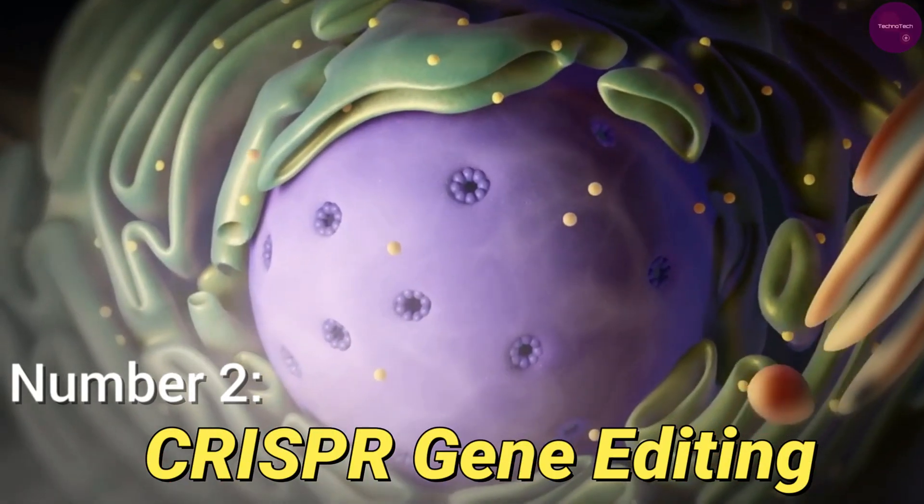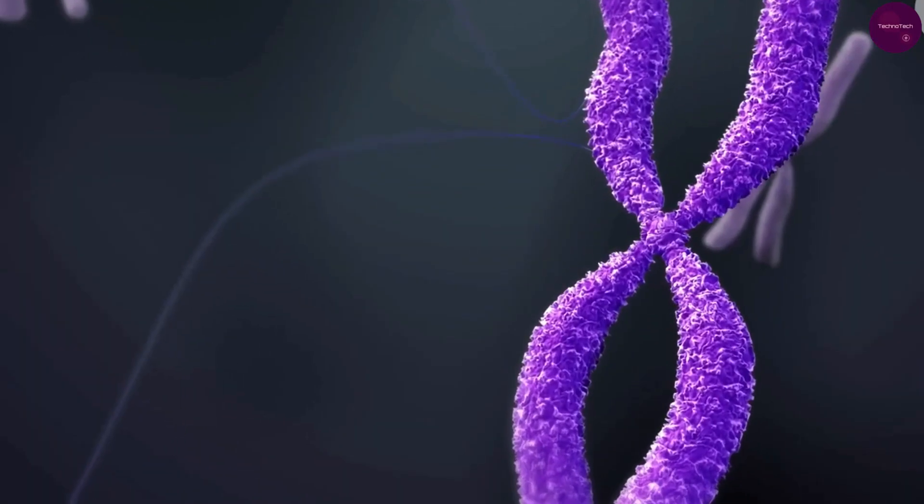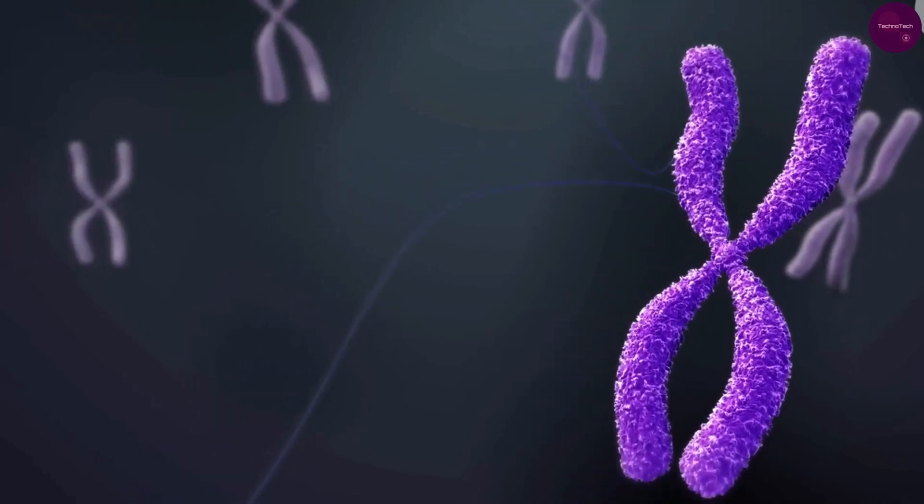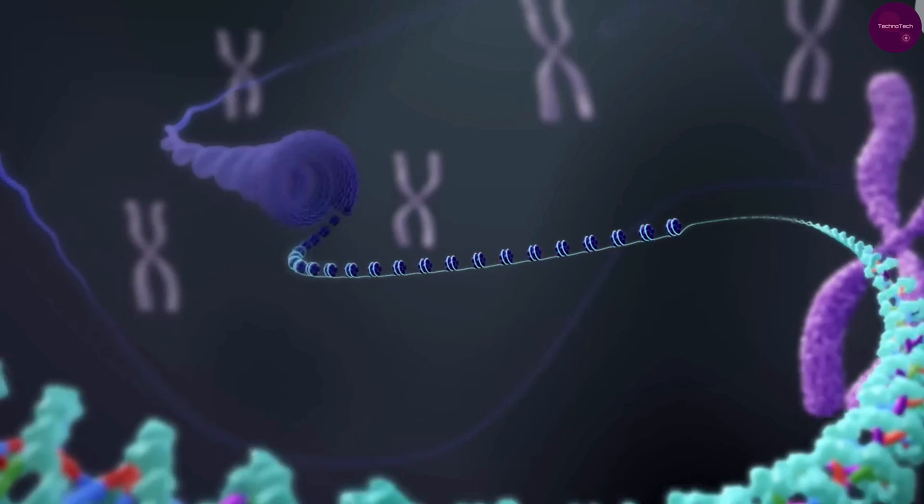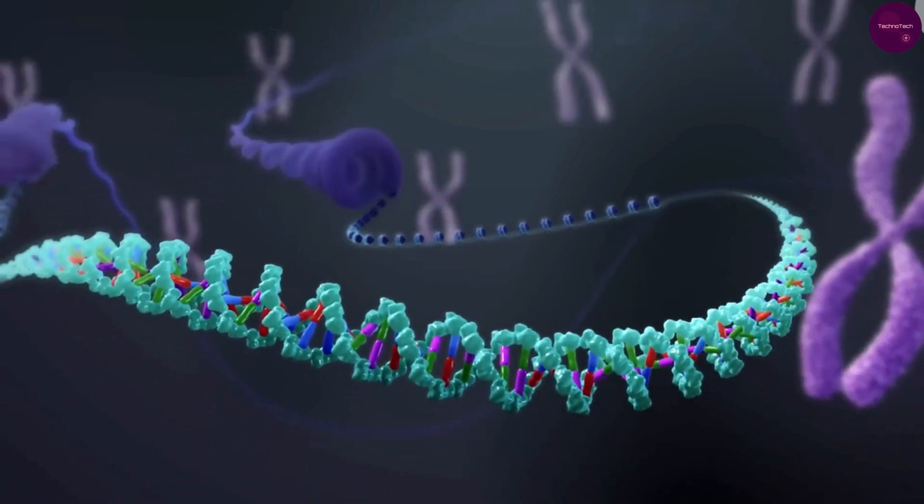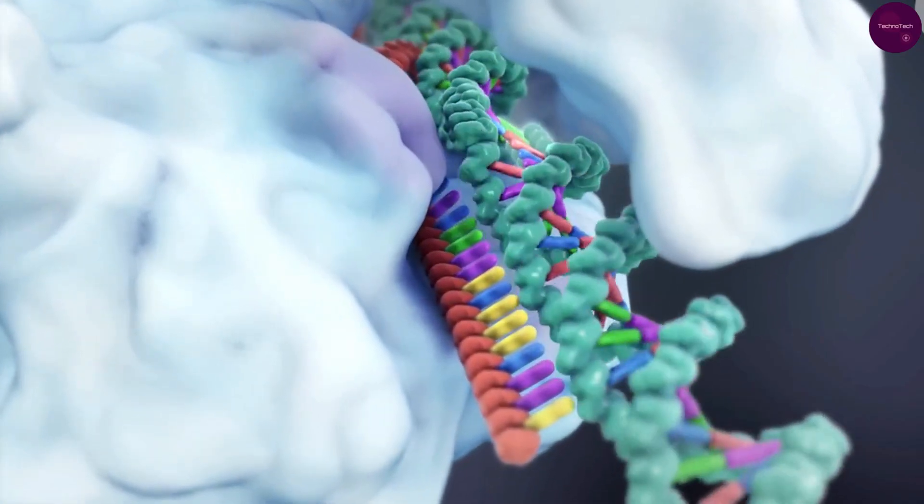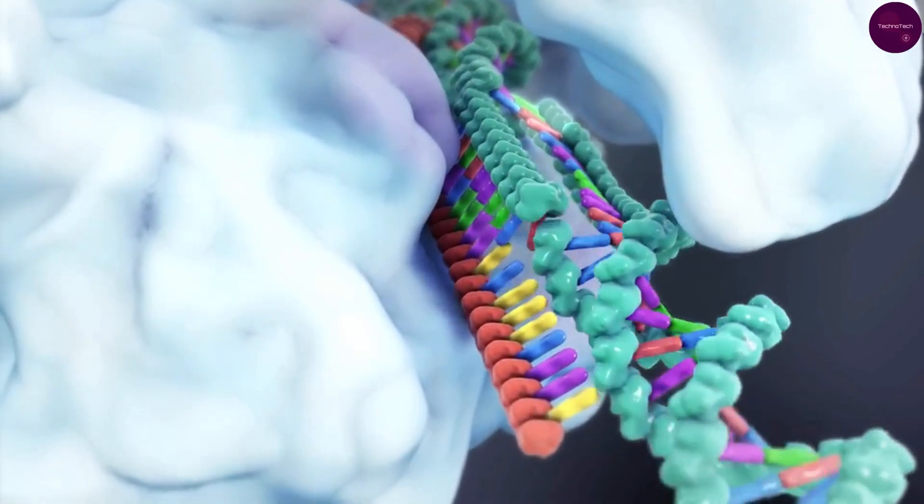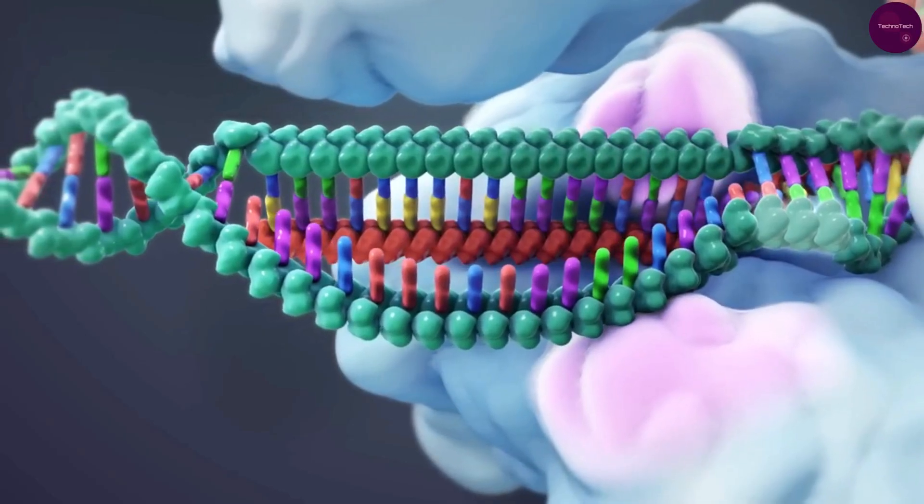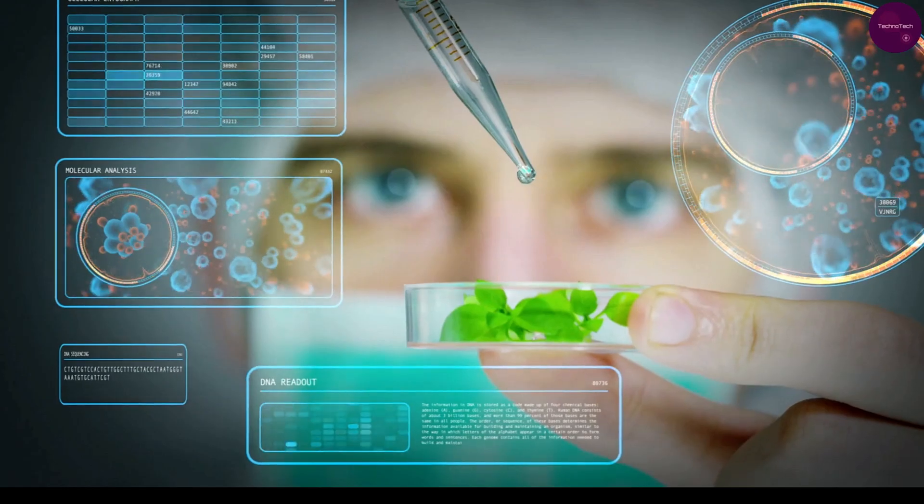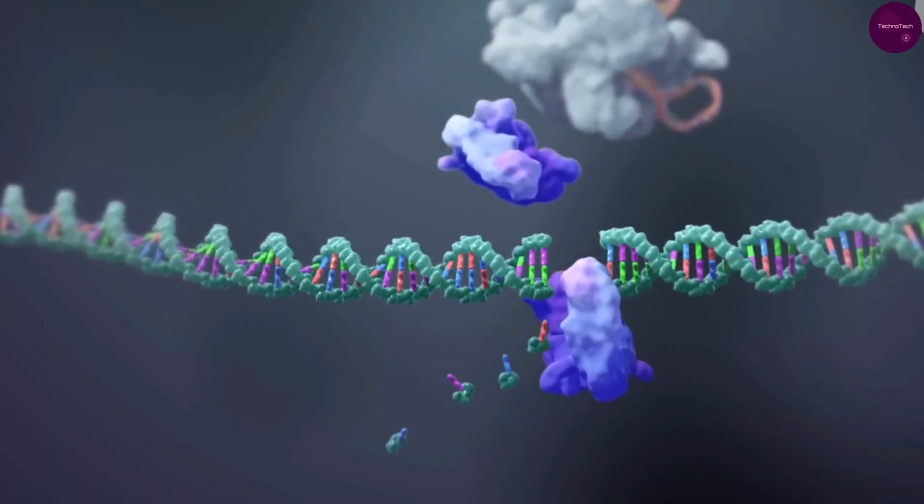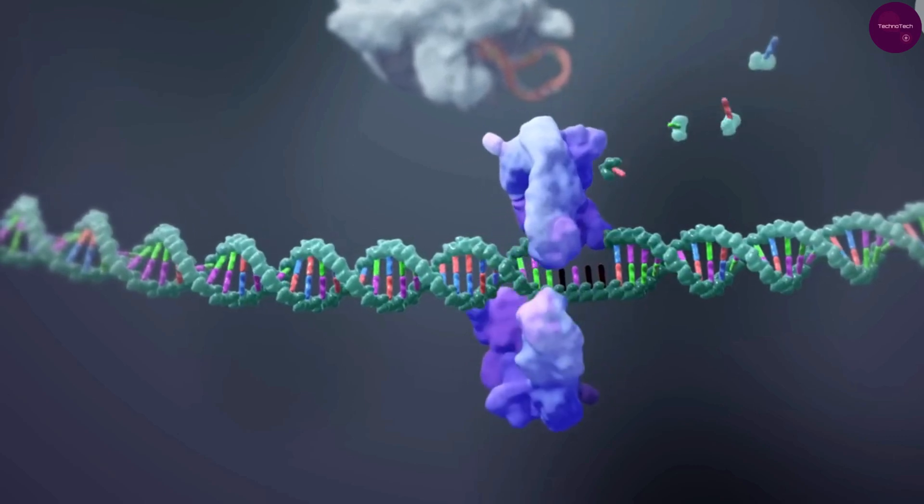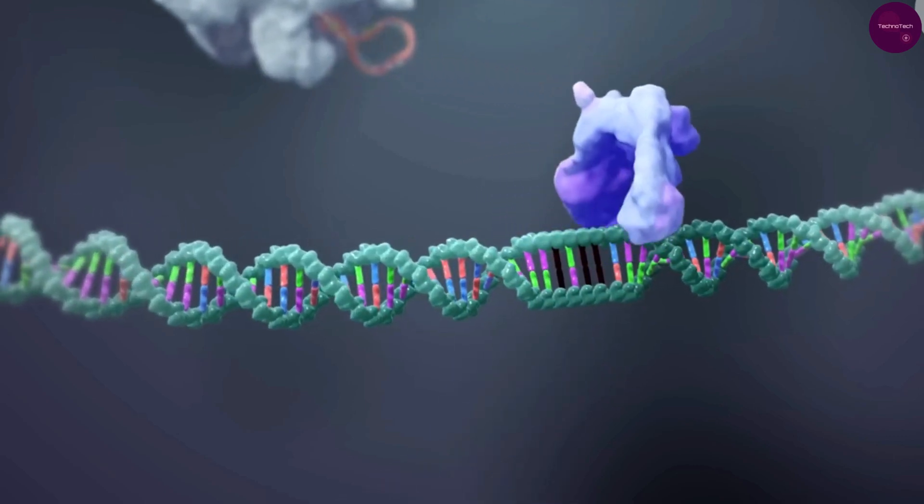Number 2: CRISPR gene editing. Coming in at number 2 is CRISPR gene editing, a revolutionary technology that allows scientists to precisely alter the DNA of living organisms. From correcting genetic defects to developing new treatments for diseases like cancer, CRISPR has the potential to reshape medicine and biotechnology. But beyond its immediate applications, CRISPR also raises ethical questions about the implications of genetic manipulation and the future of humanity.